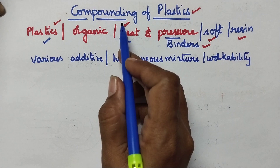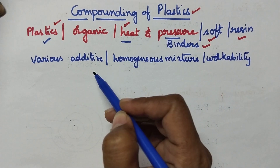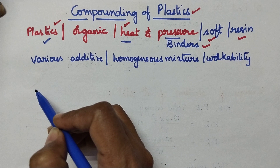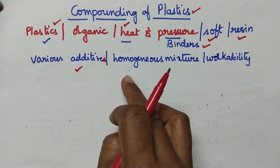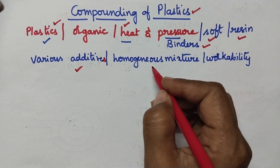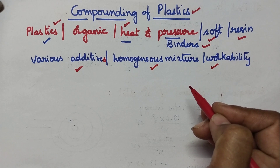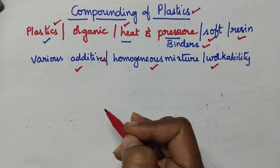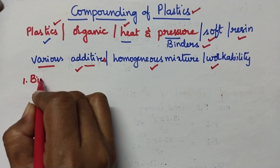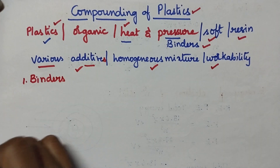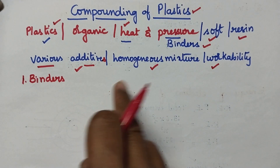What is the importance of compounding of plastics? In order to improve the properties of the plastics, several additives will be added to get a homogeneous mixture with improved workability. During the compounding of plastics, we require at least 7 additives.